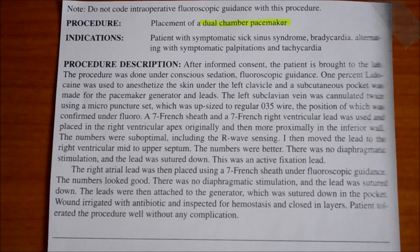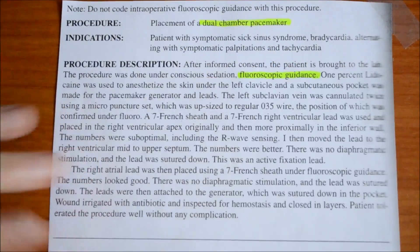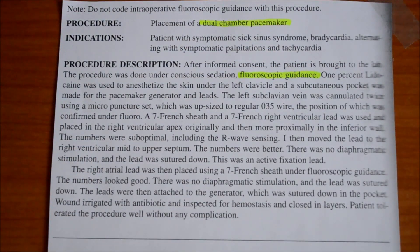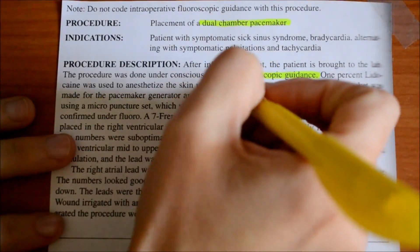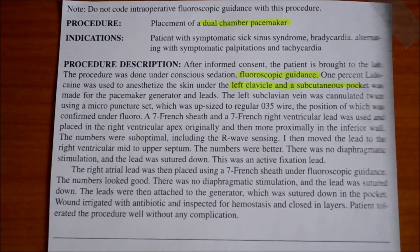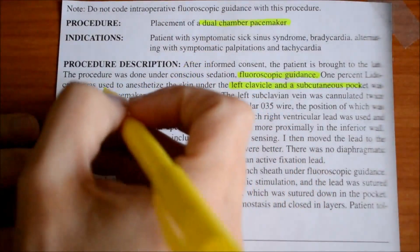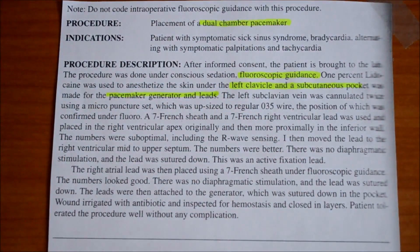Now actually reading the procedure description: after informed consent, the patient is brought to the lab. The procedure is done under conscious sedation and fluoroscopic guidance — we want to remember that information because there is fluoroscopic guidance being used, which means we will need a code for that imaging assistance. 1% lidocaine was used to anesthetize the skin under the left clavicle. We need to remember this information because they are making an incision near the left clavicle in the subcutaneous tissue and fascia, which was made for the pacemaker generator and leads. That is where the pacemaker generator is going to be inserted and the leads will connect to that generator.